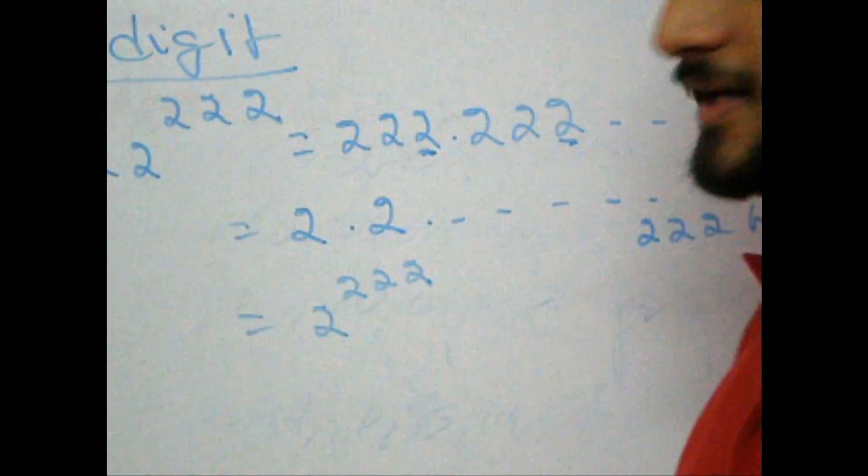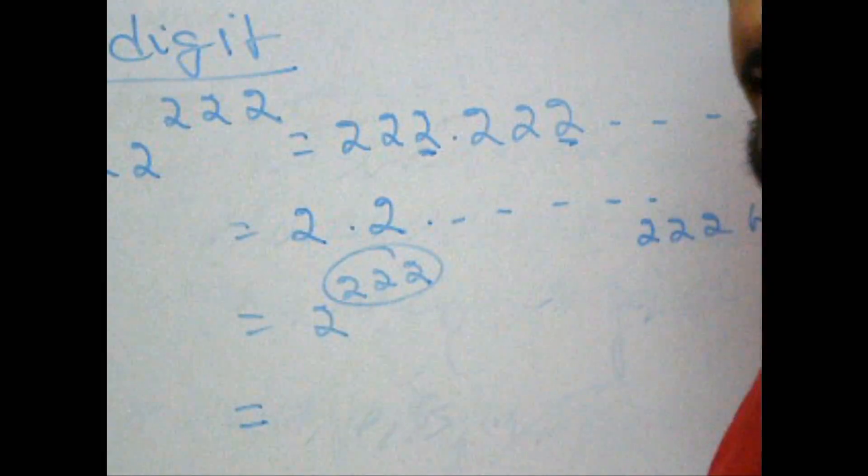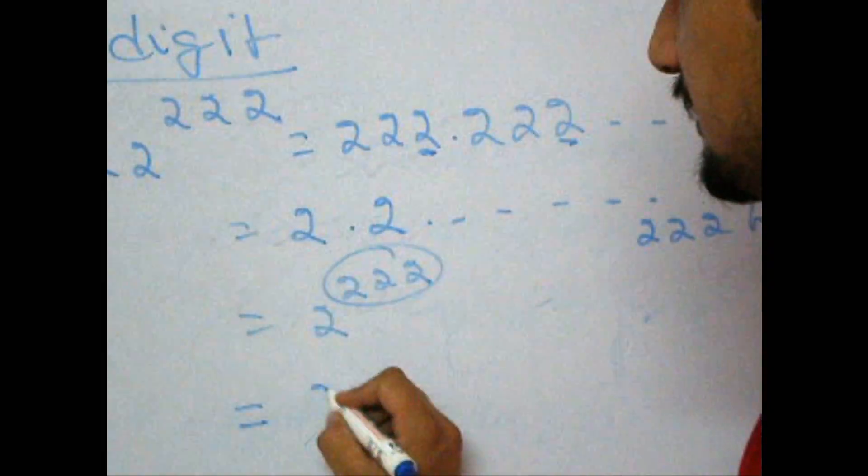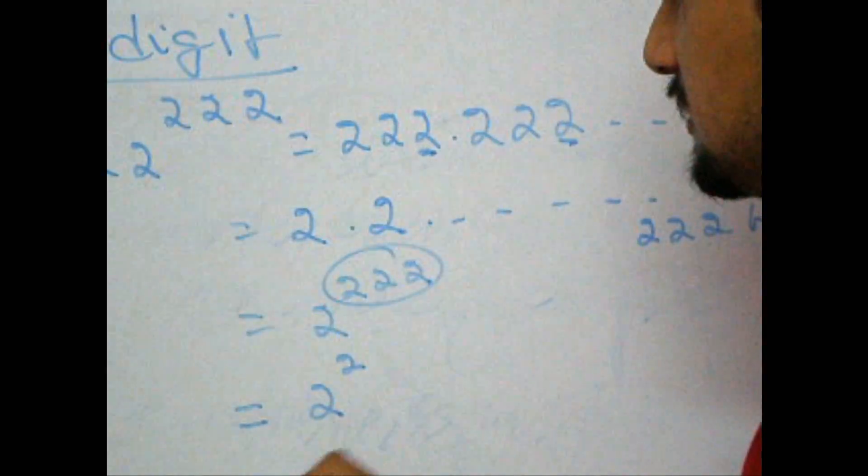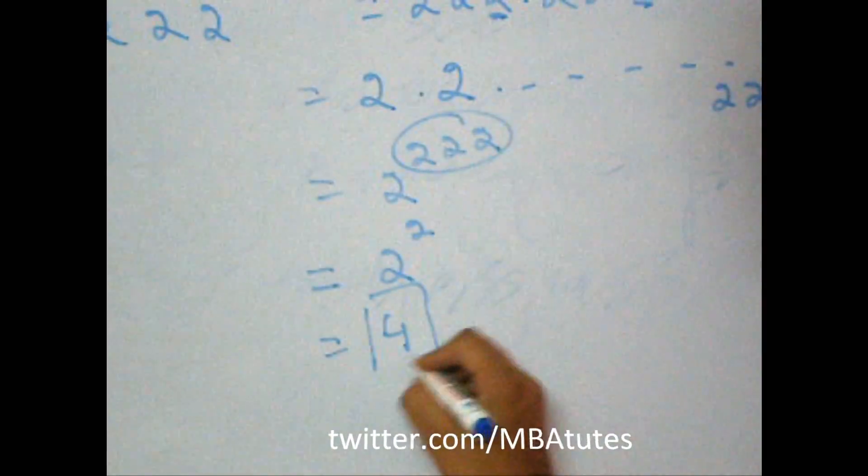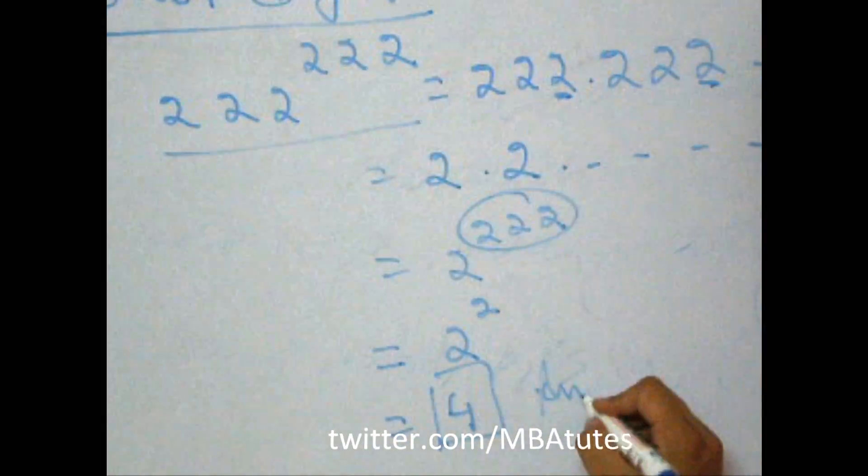What my method is, is divide the power by 4 and take the remainder. So, this question gets converted to 2 to the power 2, which is very simple for all of us, is 4. Hence, the unit digit of this expression is 4, and therefore the answer.